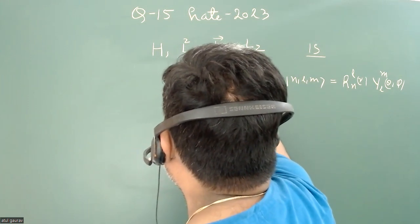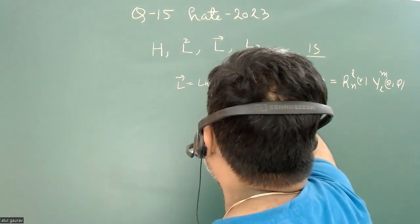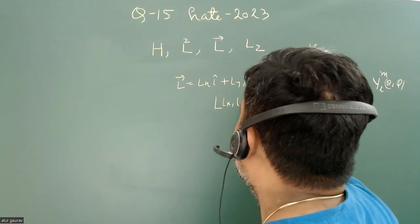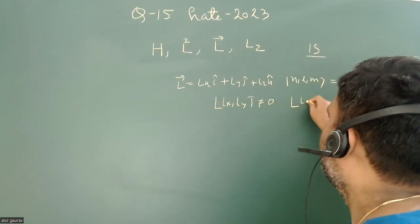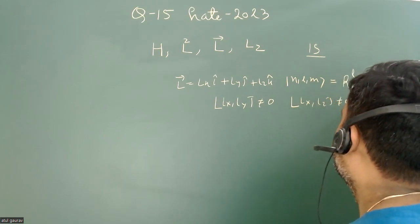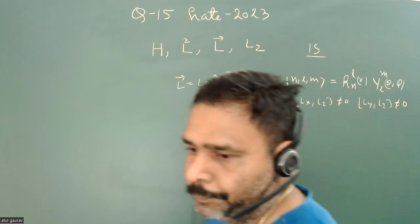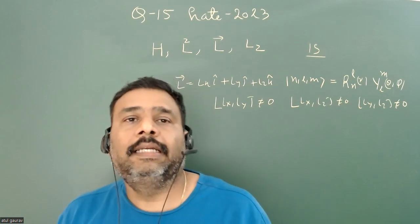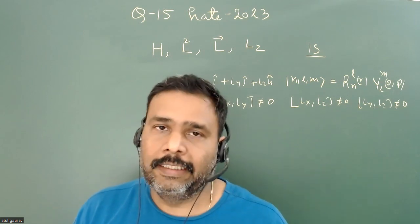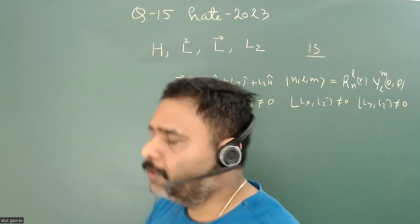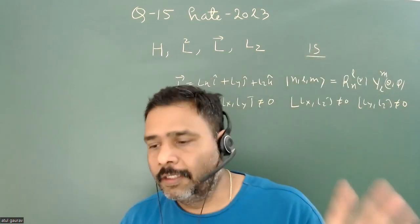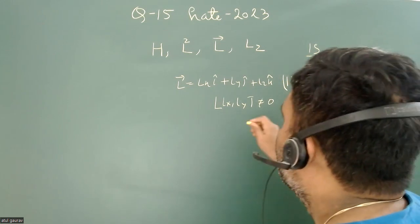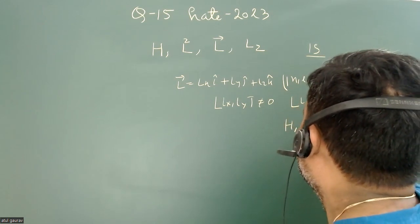But the general state |nlm⟩ is NOT an eigenstate of L. Why? Because L = Lx·î + Ly·ĵ + Lz·k̂. We all know that Lx and Ly do not commute, Lx and Lz do not commute, and Ly and Lz do not commute. According to commutation algebra, if operators do not commute it is impossible to get a common eigenstate for those operators. So for general |nlm⟩, the eigenstates are H, L², and Lz only.